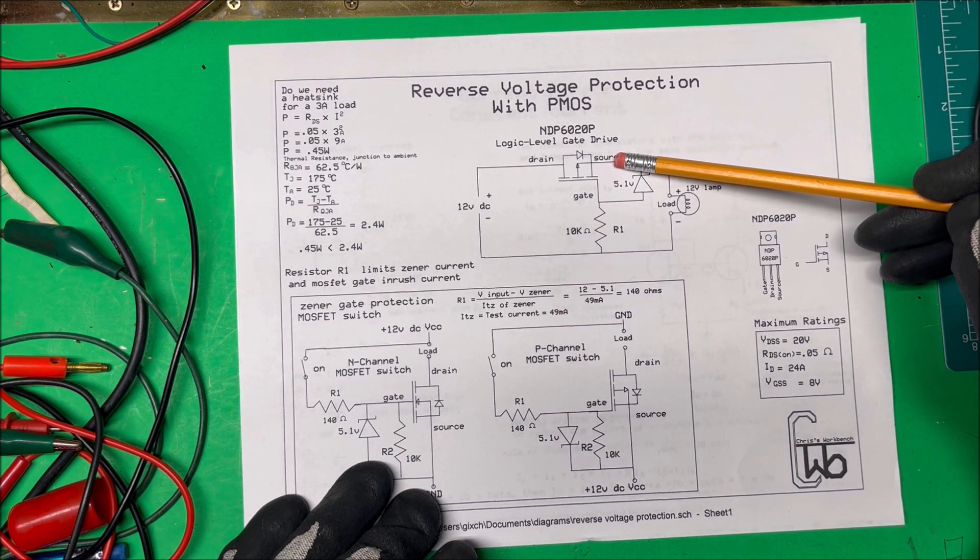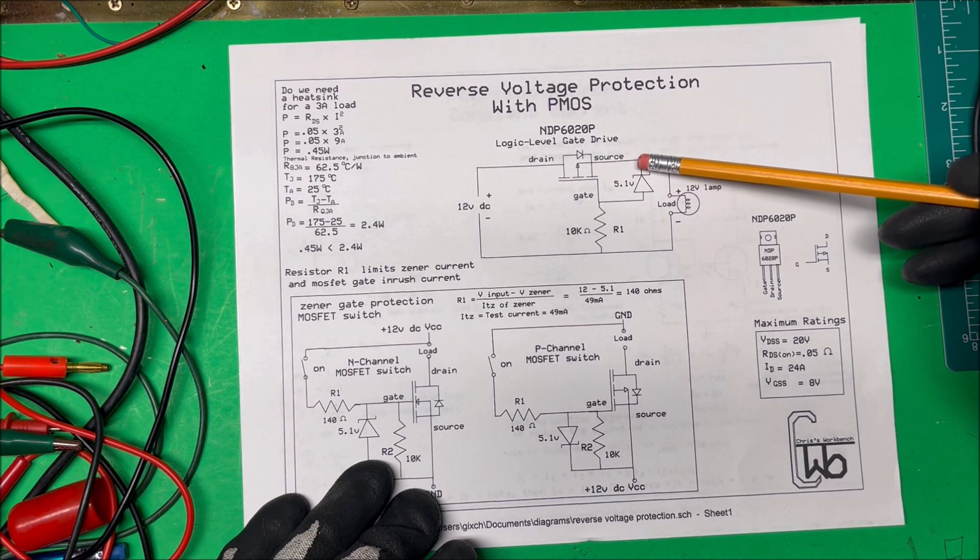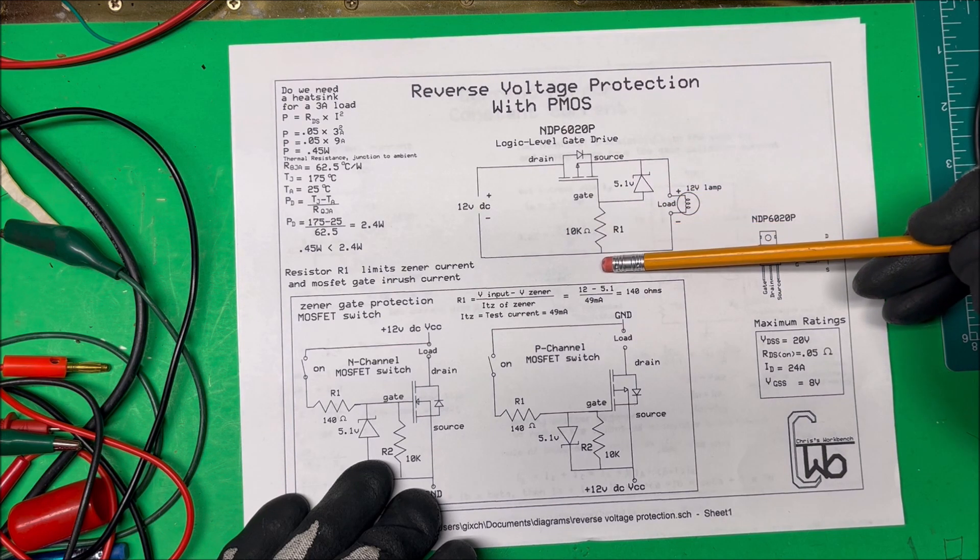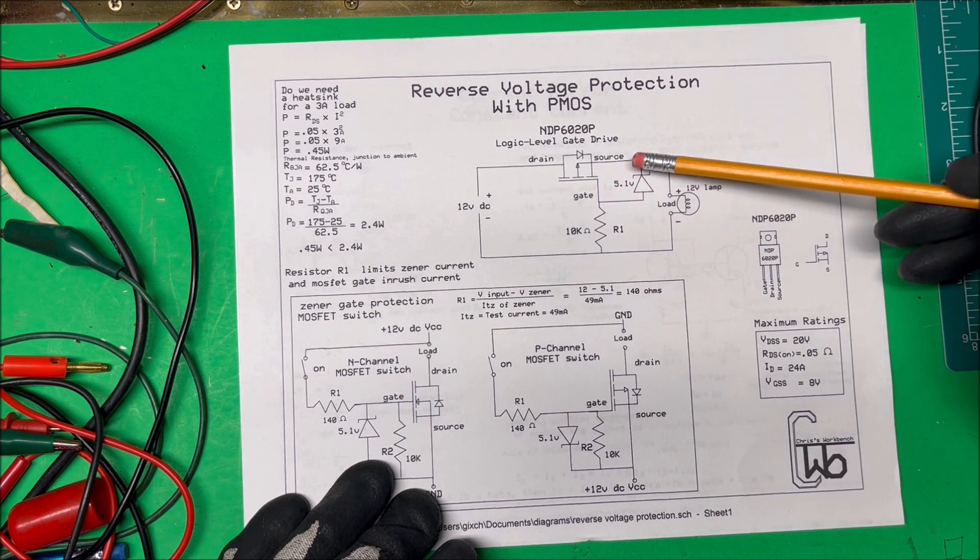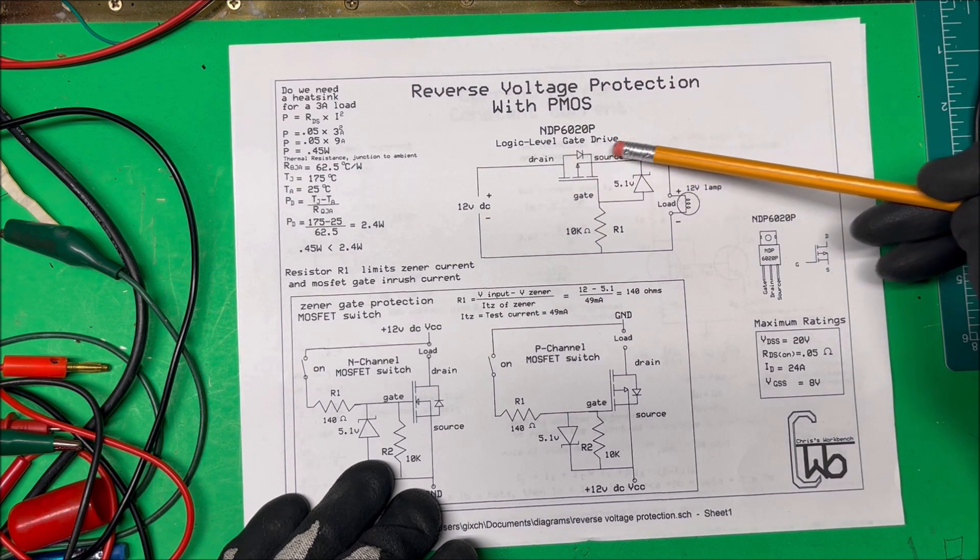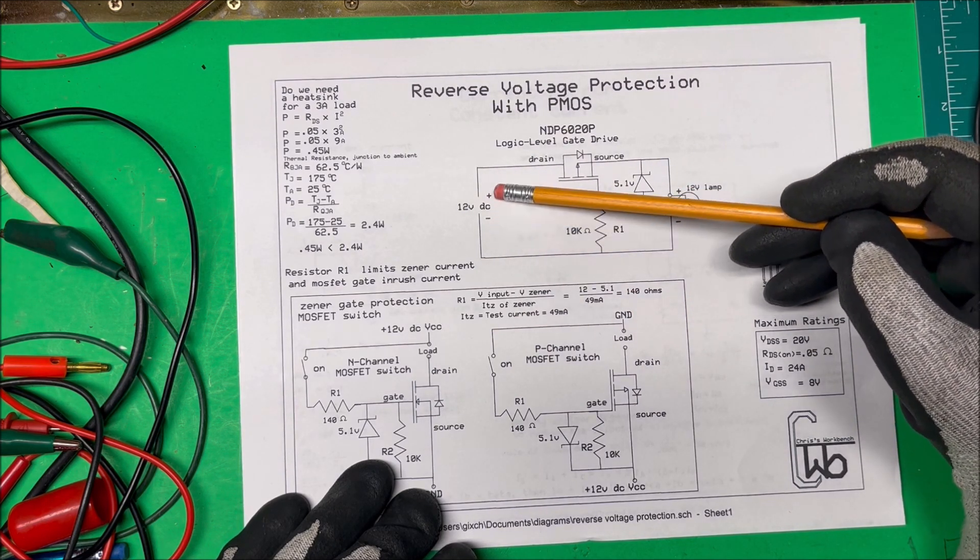We'll have probably 11.3 volts up here, and then we have our zener in here and the other side tied to ground through this 10k, and we're going to get negative 5 volts onto the gate here. That's going to turn our load on for us.